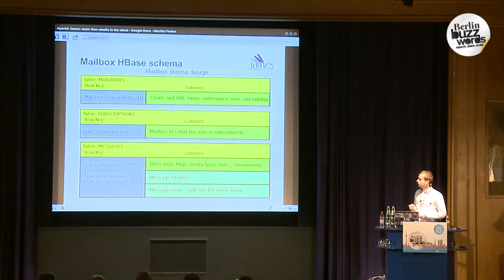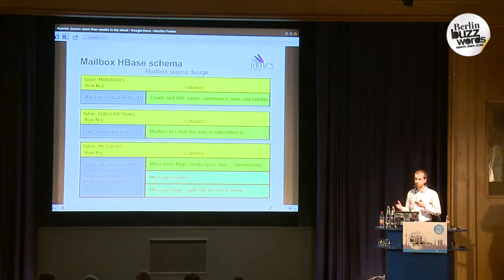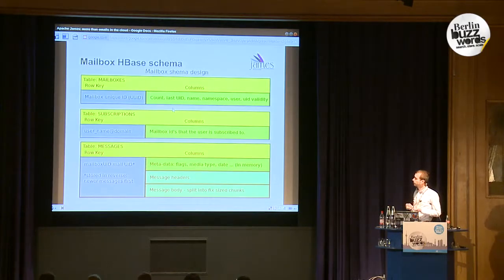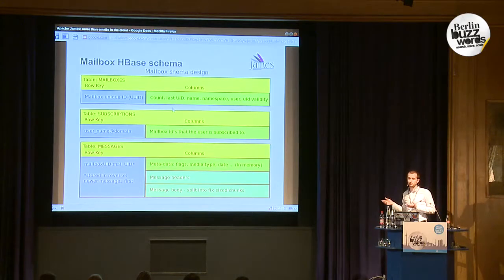Another table is the subscription table. A user has many mailboxes that it can subscribe to, and will see when new messages arrive in those mailboxes. The subscription table uses the username as the row key, and then the list of mailbox IDs as the list of mailboxes to which the user is subscribed.